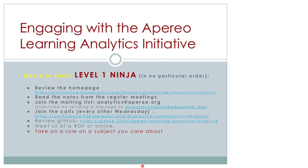At level one, you should start by reviewing the homepage — the link is in Confluence, a kind of wiki. If you don't like the information there, feel free to contact us. Read the notes from the regular meetings, also in Confluence. The next stage is to join the mailing list — it's a bit quiet at the moment since we've been primarily in conference calls, but it will get busier as more people join. Start by lurking, then questioning, and once you feel confident, start sending messages.